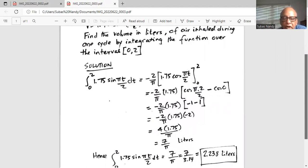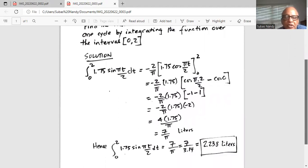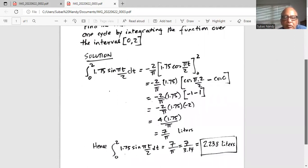So the final answer is 7 over pi liters. We substitute the value of 3.144 for pi and we get the definite integral from 0 to 2, 1.75 sine pi t over 2 dt is equal to 2.238 liters.